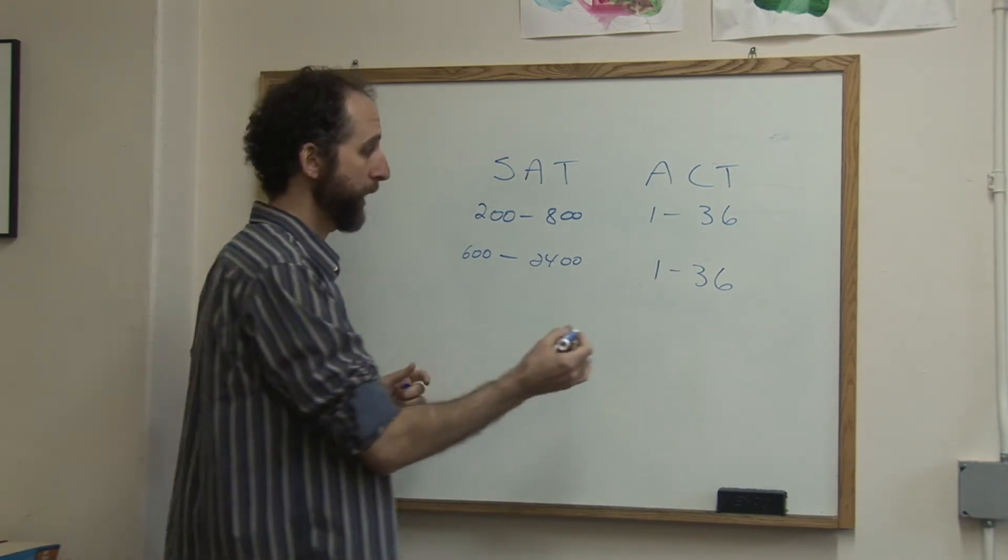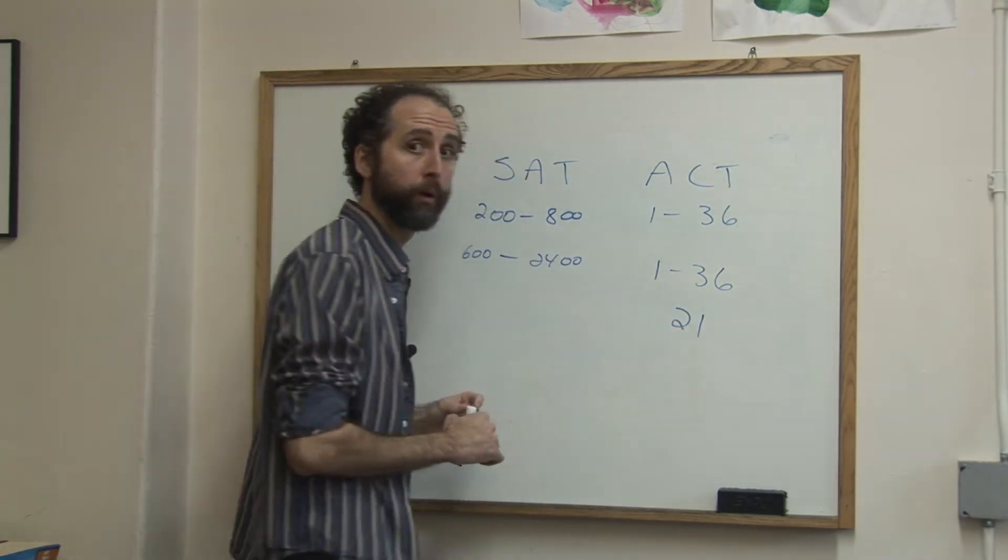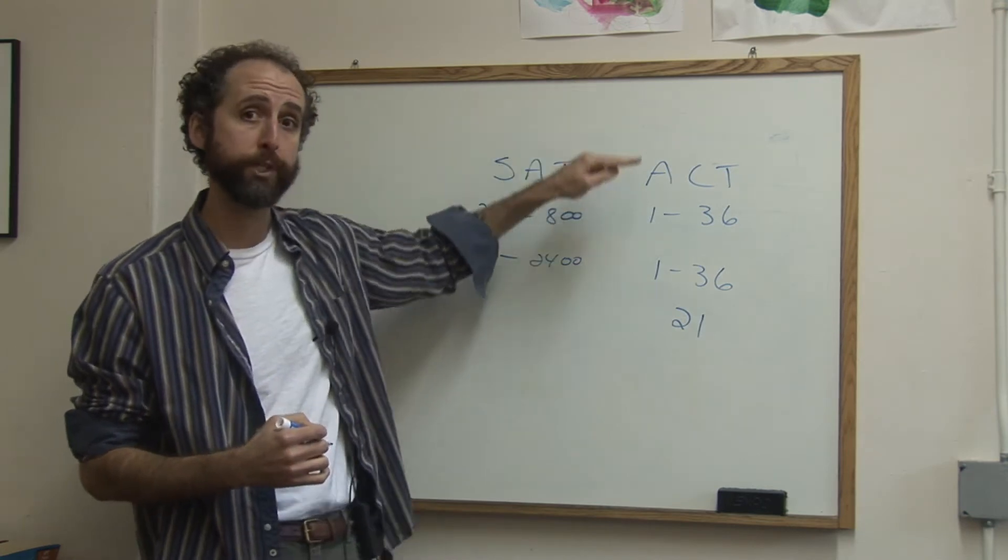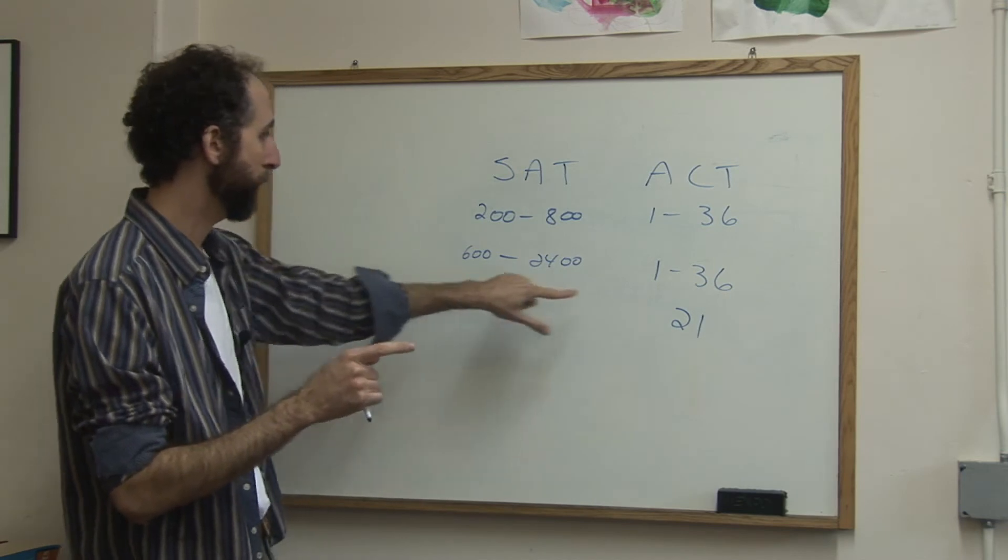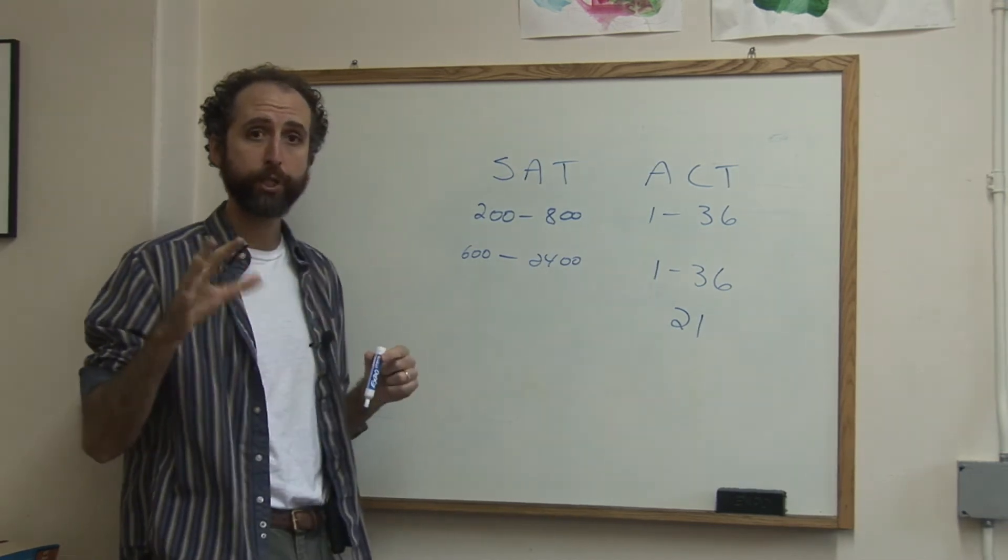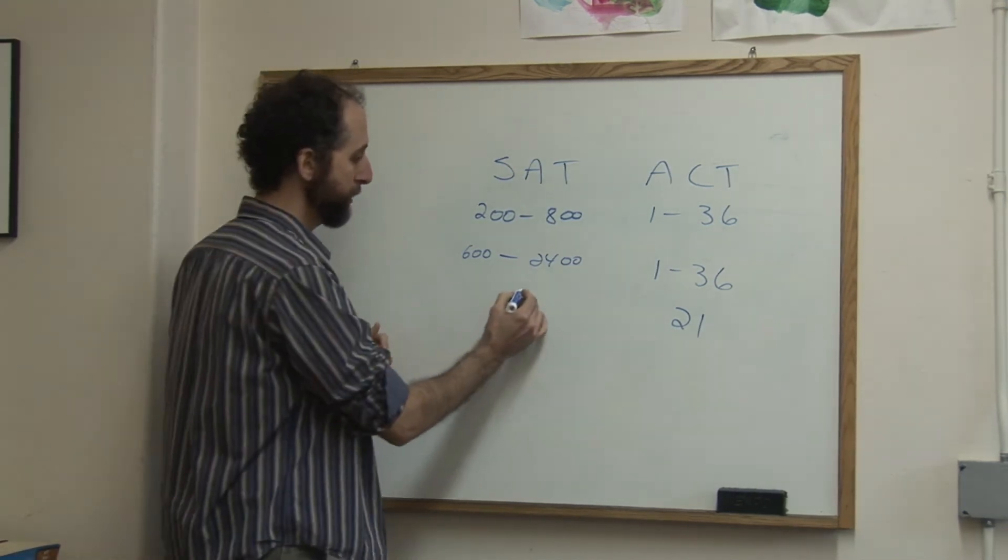The national average for the ACT is about 21. It's actually about 21 on all four sections, and it's 21 for the national average. To give you a sense of the comparison, the national average in general for the SAT is about 500.